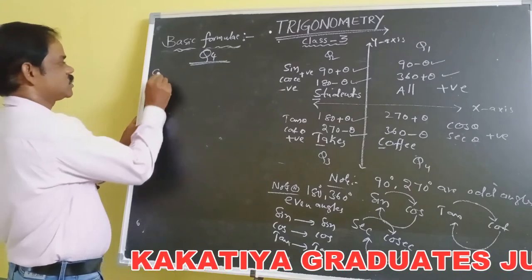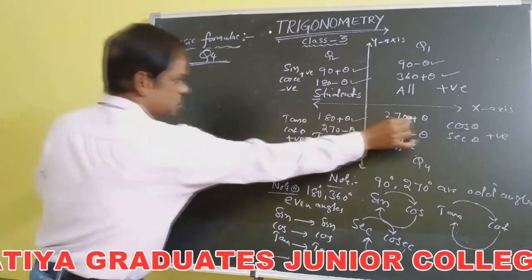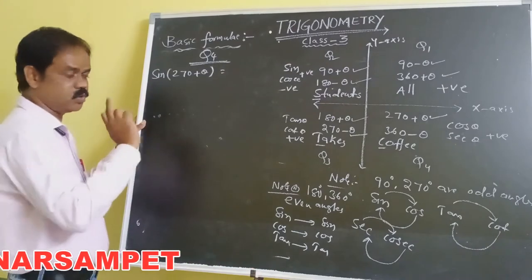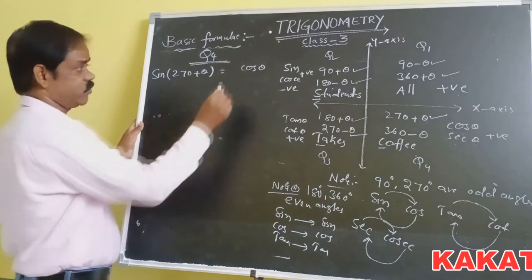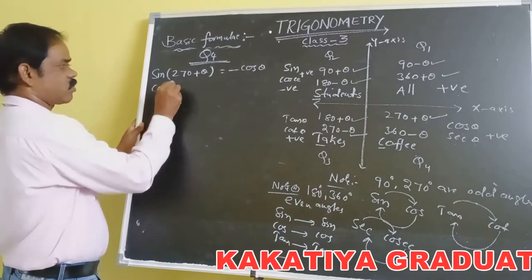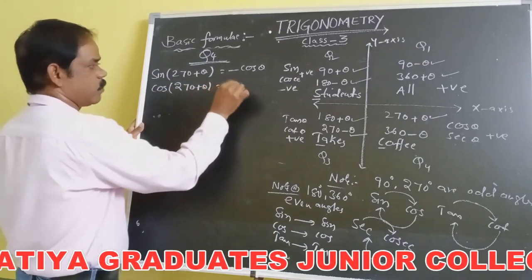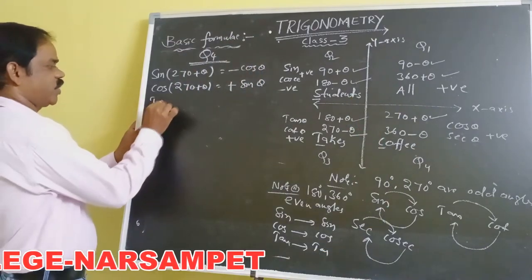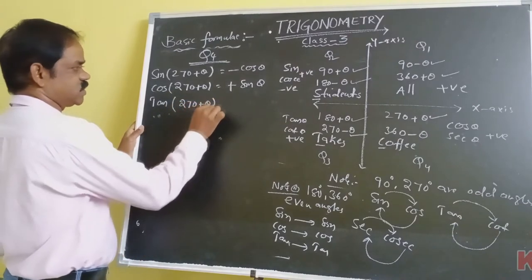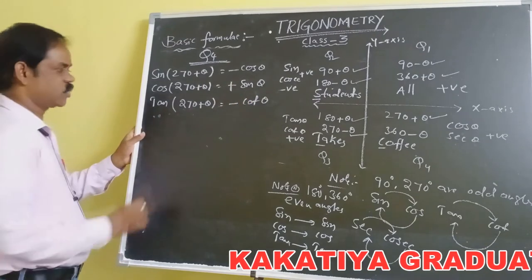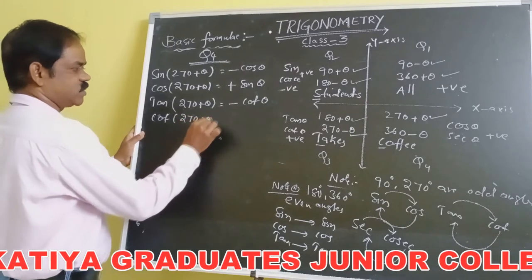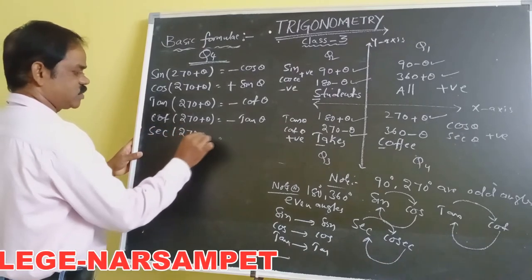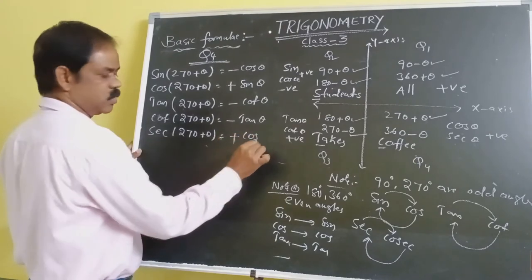For the fourth coordinate, consider 270 + θ. Since 270 is odd, sin changes into cos. Sin(270 + θ) = minus cos θ, because sin is negative in the fourth coordinate. Cos(270 + θ) = plus sin θ, because cos is positive in the fourth coordinate. Tan(270 + θ) = minus cot θ. Cot(270 + θ) = minus tan θ. Sec(270 + θ) = minus cosec θ.